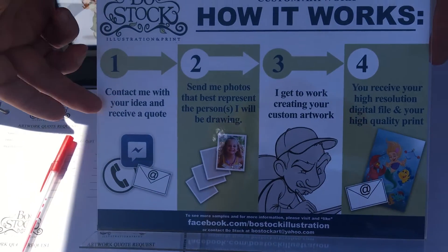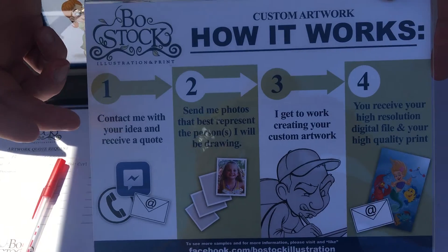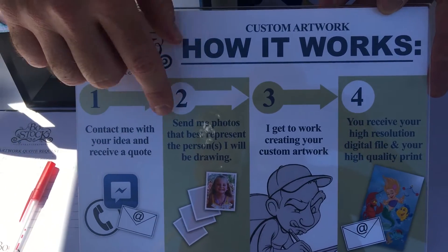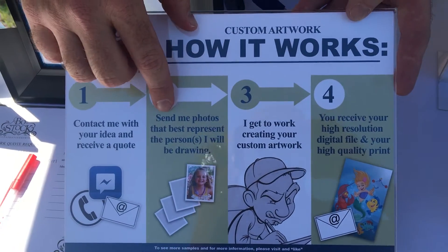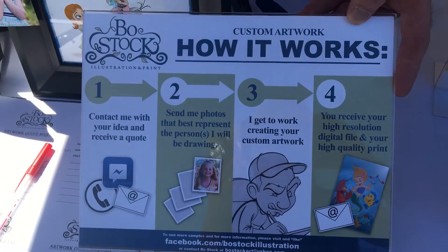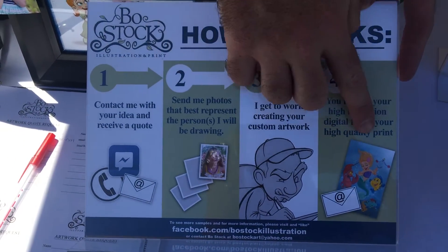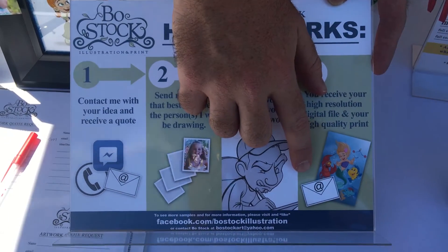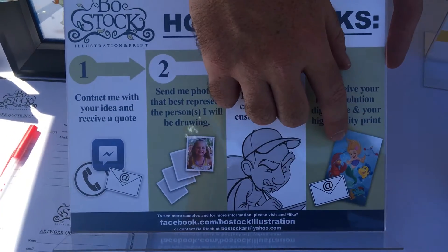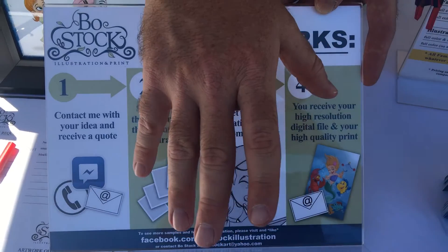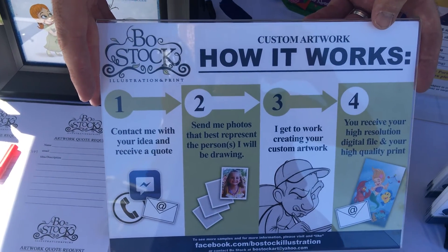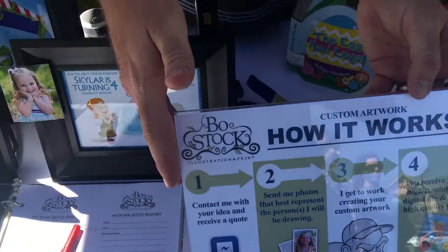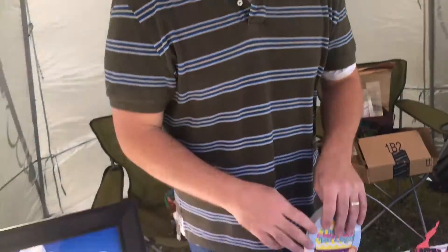Can you explain the process? Basically, you get in touch with me with your idea, we talk it over, send me pictures of the people, person, or even a pet you want drawn. I get to work on it, then send you an actual print and a digital file you can do whatever you want with. If a business wants a logo developed, they can also come to you? Correct, absolutely.